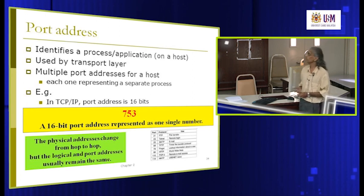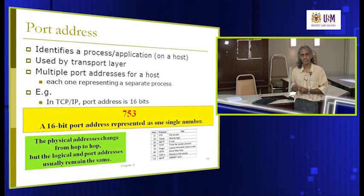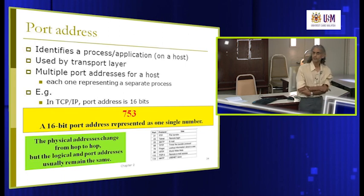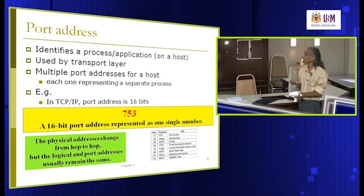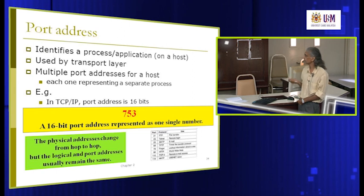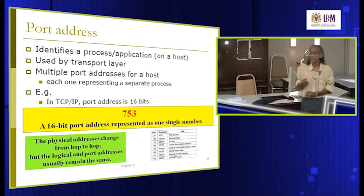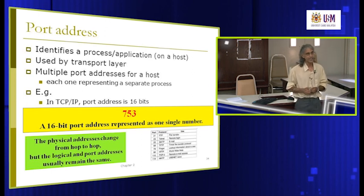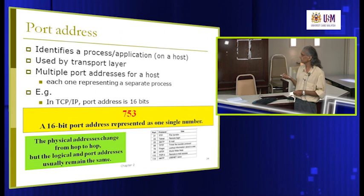The port address identifies a process or application on a host, and is used by the transport layer to differentiate multiple applications running on the same host. One host can have multiple applications running simultaneously, each on a different port — if two run on the same port there will be a conflict. Port addresses in TCP/IP are 16 bits. Common well-known ports are fixed — for example, port 80 is always reserved for web HTTP traffic, while email uses ports like SMTP.